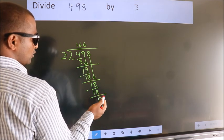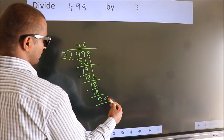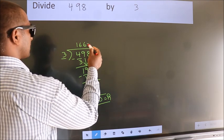No more numbers to bring it down. So, we stop here. This is our remainder. This is our quotient.